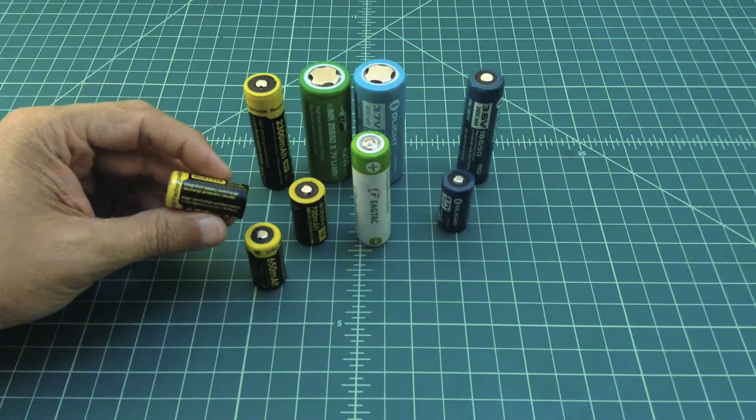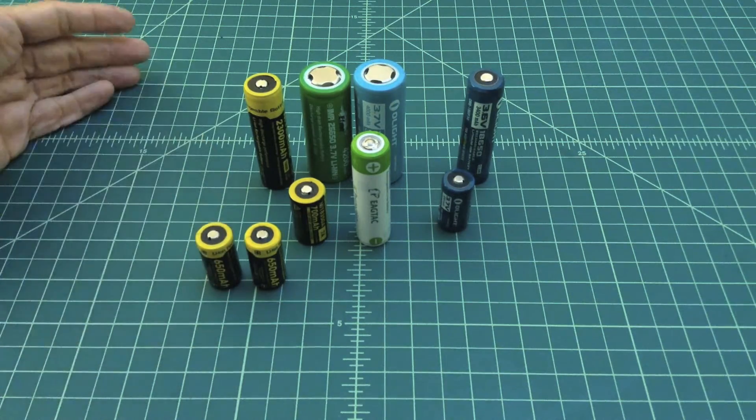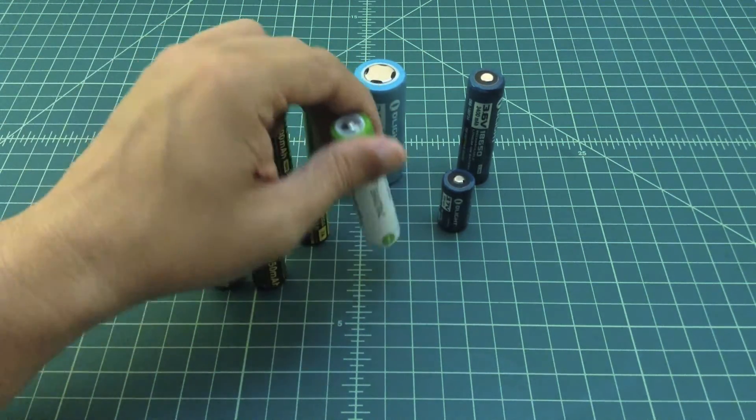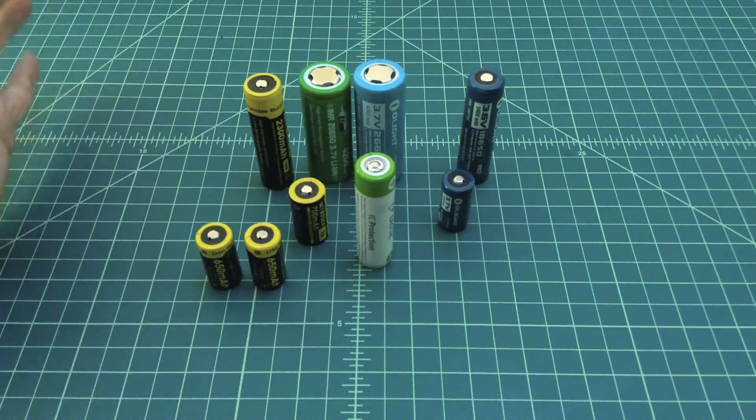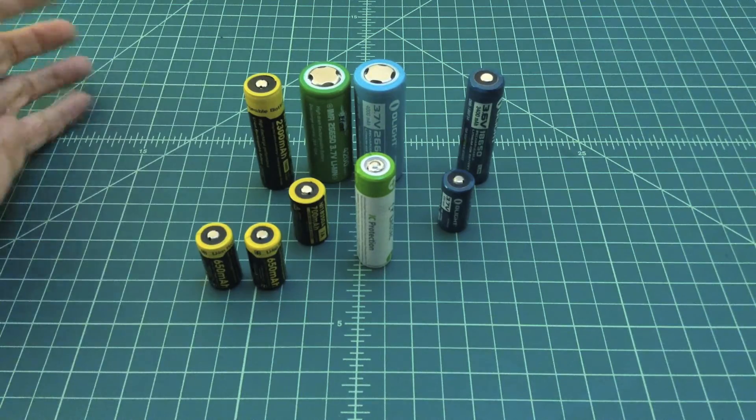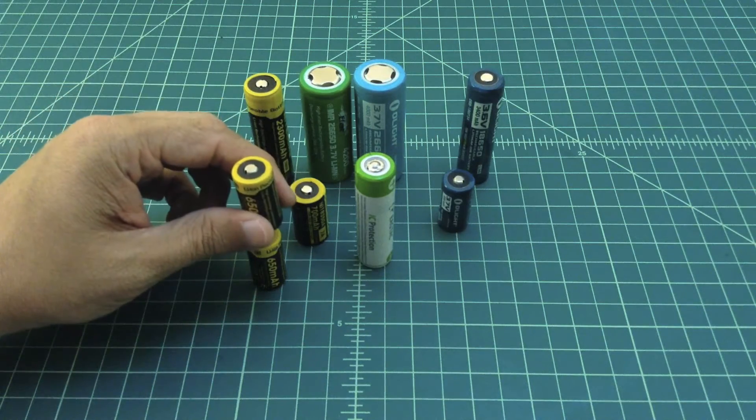These are about 3.7 volts and they can charge up to 4.1. When I put this battery into a flashlight, it's really going to run off of about 4.1 to 3.6 volts, somewhere right around there.